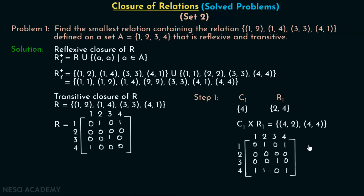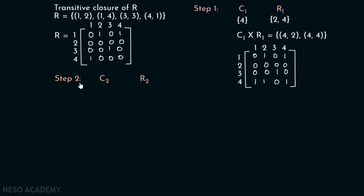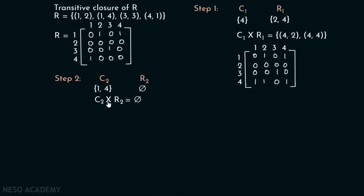Now we apply Step 2. We consider column 2 and row 2 of the new matrix. In column 2, the value 1 is present at positions 1 and 4, so C2 = {1,4}. In row 2, there are no 1s present, so R2 is empty. Therefore C2 × R2 is empty, and no changes are made to the matrix.